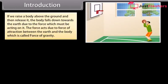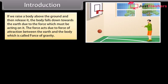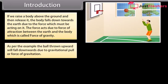If we raise a body above the ground and then release it, the body falls down towards the earth due to the force acting on it. This force acts due to the force of attraction between the earth and the body, which is called force of gravity. A ball thrown upward will fall downwards due to gravitational pull or force of gravitation.